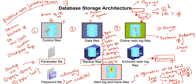These are the major physical files for database storage — that is the storage architecture. Today we had just an overview, but in later sections we will study control files, data files, and parameter files in more detail and depth to clarify the concepts. That's all for now — thank you so much, bye, stay safe.